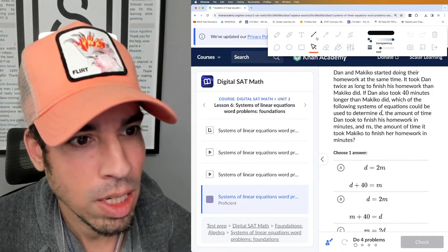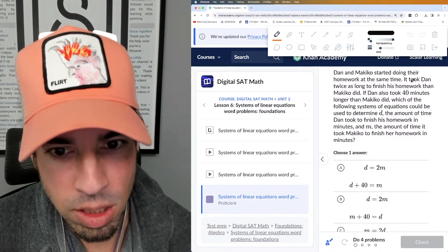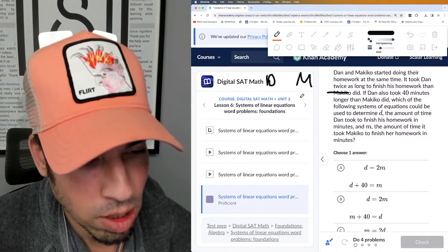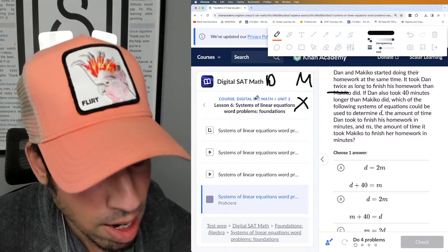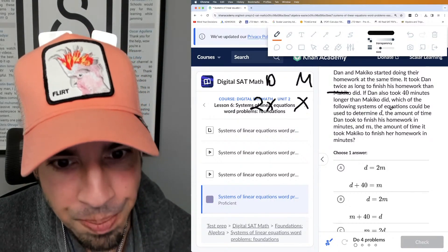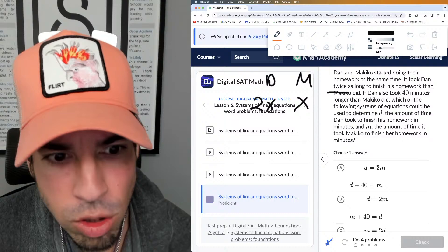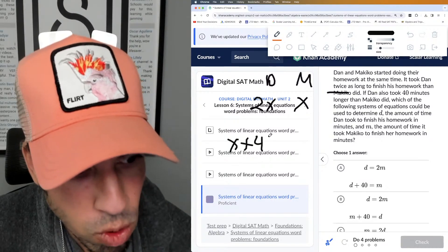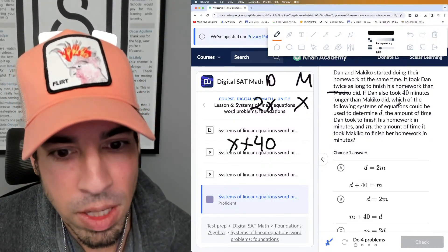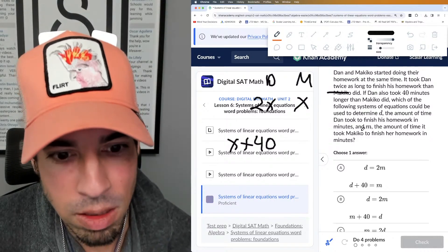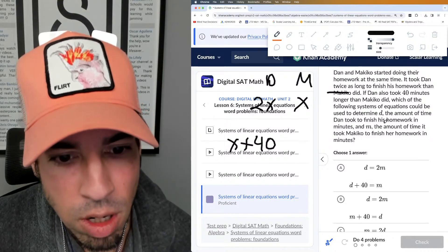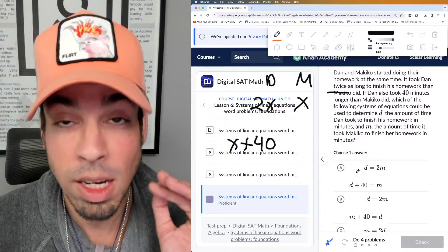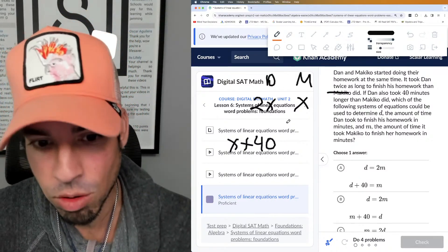Okay, Dan and Makiko started doing their homework at the same time. It took Dan twice as long to finish his homework than Makiko did. So what we could say is Makiko took x, Dan took 2x. So I'm immediately creating a nice little table. If Dan also took 40 minutes longer, which is the same as x plus 40, so Dan took 40 minutes longer, which is the buying systems of the equation could be used to determine the amount of time. Okay, so we're talking about system of equations in minutes.